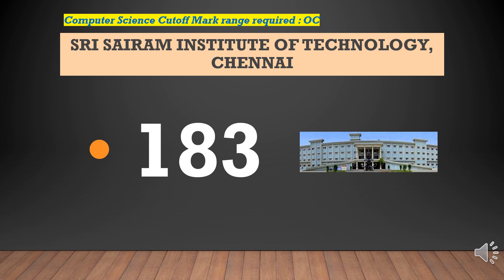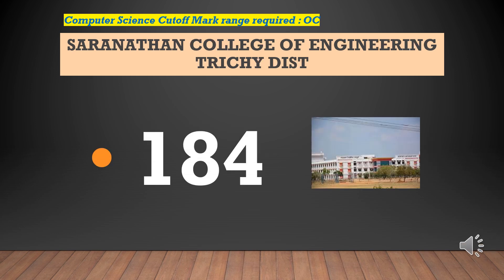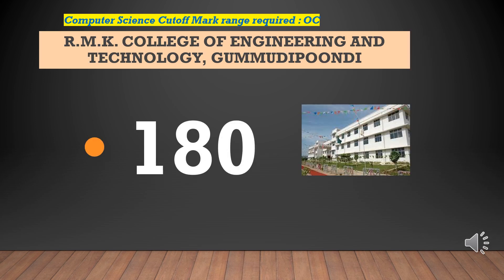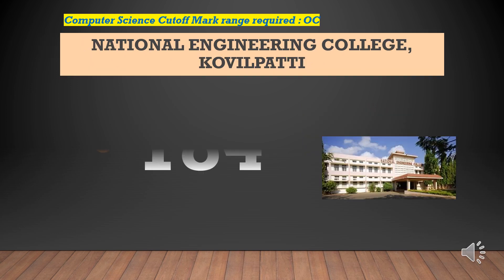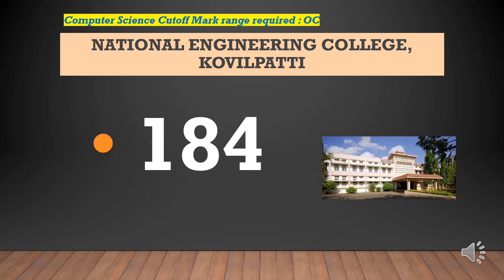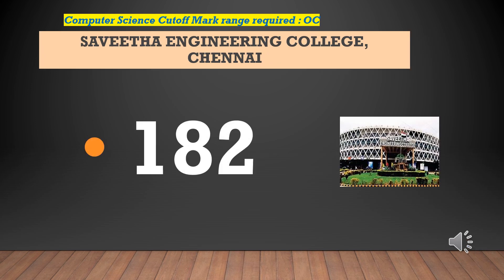Saranathan College of Engineering — cut-off required for CSEOC is 183–184. RMK College of Engineering and Technology — cut-off required for CSEOC is 180. National Engineering College — cut-off required for CSEOC is 184. Sivitha Engineering College — cut-off required for CSEOC is 182.